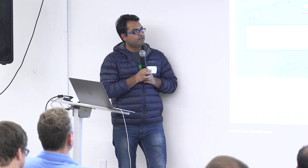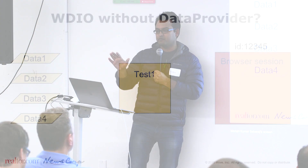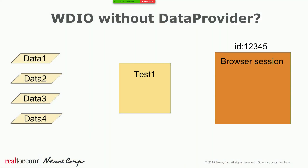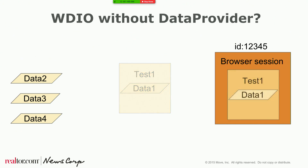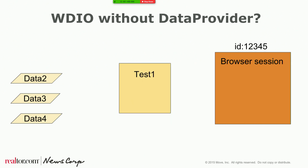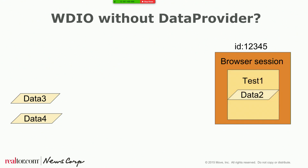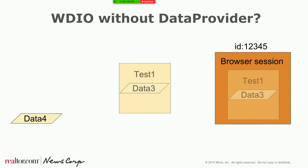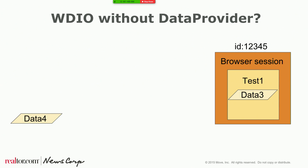It's one test that runs in different data contexts. Looking at the current WebDriverIO setup, you have a test, a set of data sets, and one browser session dedicated to that test. What actually happens is your test takes the first data set, puts it into the browser session, executes it, and once finished it takes the next data set, puts it into the same browser session, executes it, and so on.